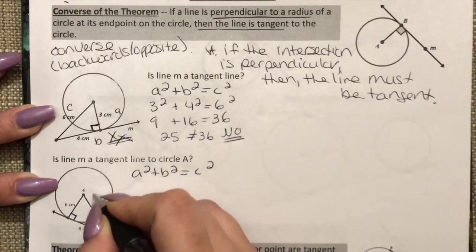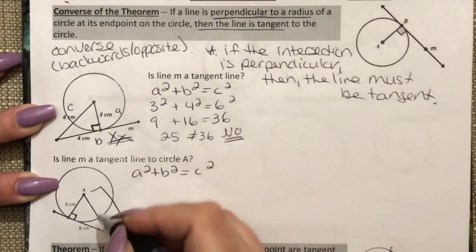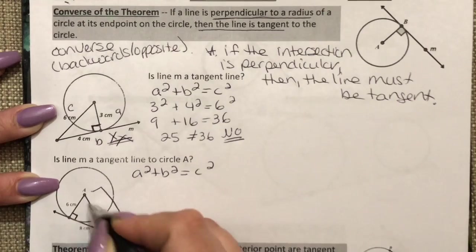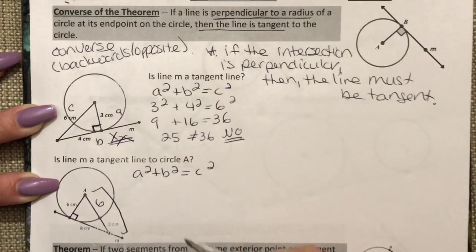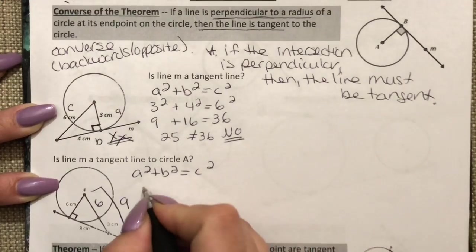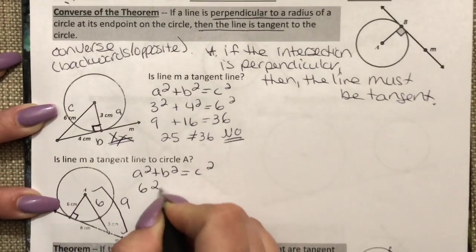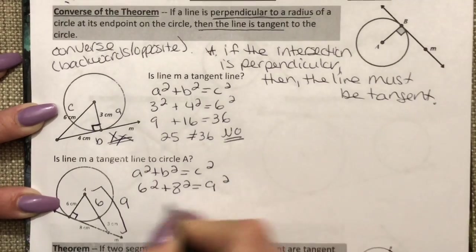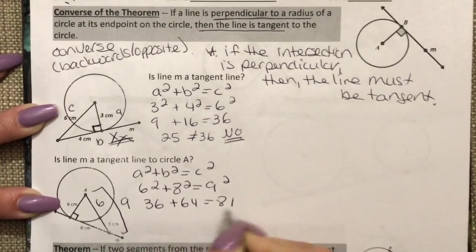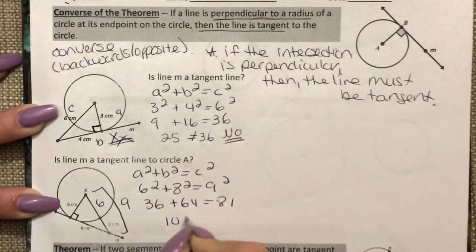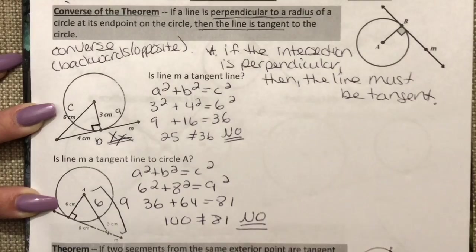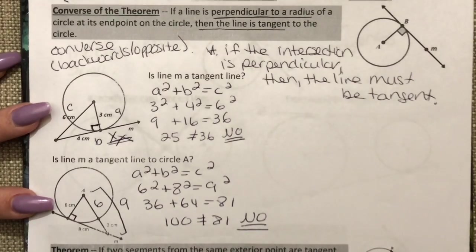So this is my hypotenuse here, and I can see I'm missing this piece but again this is my radius. So if this is 6 this must be 6 as well, so the whole thing must be 9. So I have 6 squared plus 8 squared equals 9 squared. 100 does not equal 81, so this line must also not be tangent.